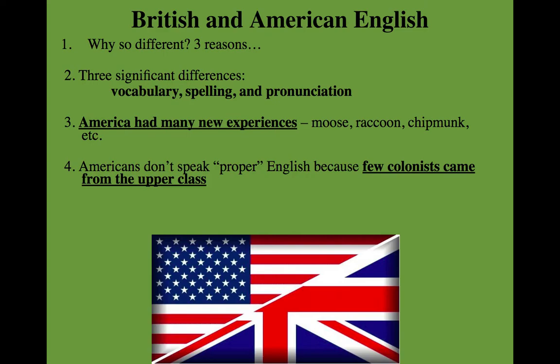Obviously, we have a different dialect than people in Great Britain. There are three main reasons: vocabulary, spelling — we've changed some words to make them more American — and pronunciation. With vocabulary, we're talking mostly about new words for new experiences. When settlers got here, there were new things not found in Europe, whether it was a moose or a raccoon. The other factor in vocabulary and pronunciation is that America was settled by poor people who didn't speak proper English — like the woman in My Fair Lady selling flowers — people of the lower classes.